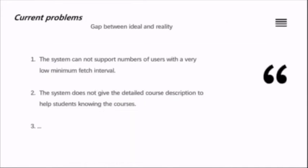However, there is always a gap between idea and reality. Our system still has some problems. The first problem is that the system cannot support a large number of users with a very low minimum request interval — if the system receives too many requests in a short time, the Firebase SDK may throw a quota error. The second problem is that the system does not provide detailed course descriptions to help students evaluate courses. More information should be shown, and there may be additional problems we haven't yet found. That is the end of my part — thank you for listening.